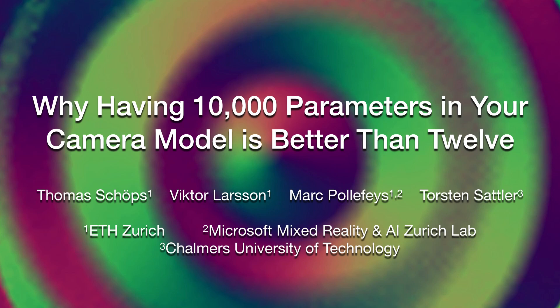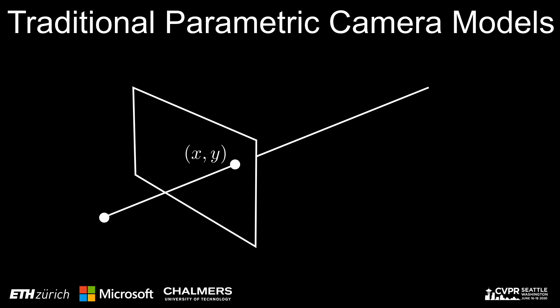My name is Thorsten Sattler and this is joint work with Thomas Schoeps, Victor Larsson, and Marc Polyphase on why having 10,000 parameters in a camera model is better than 12. In this work we consider the problem of highly accurate camera calibration, which is an important prerequisite for 3D computer vision applications such as structure from motion and stereo. The goal of the calibration process is to associate each pixel with the corresponding viewing ray in 3D.